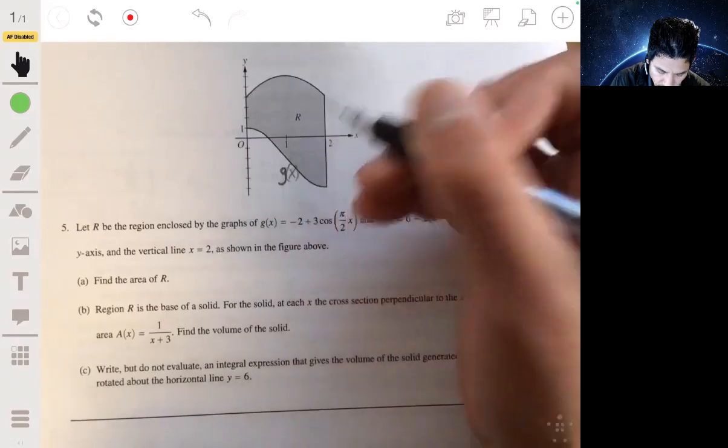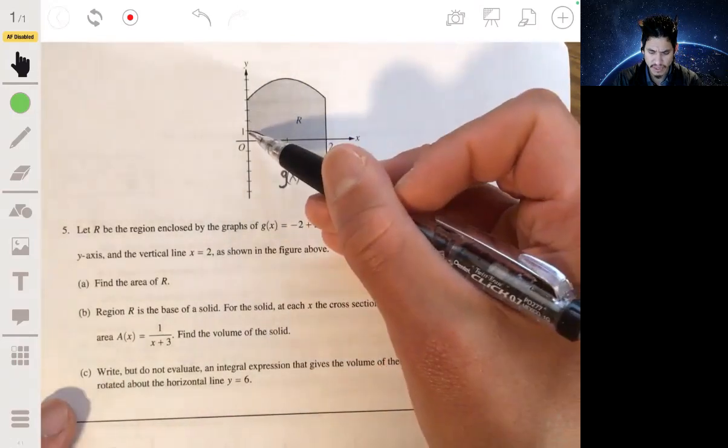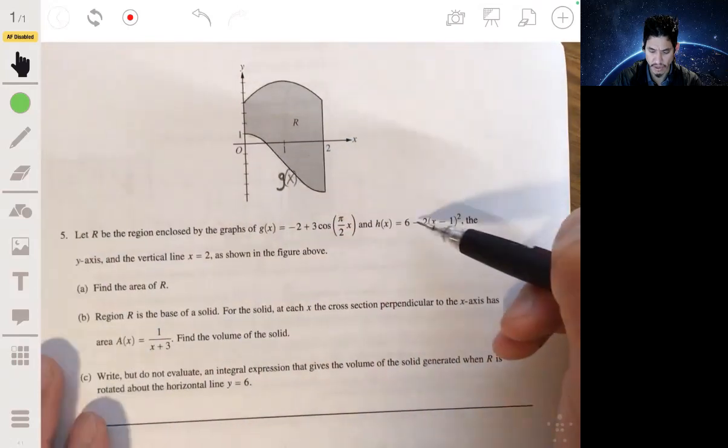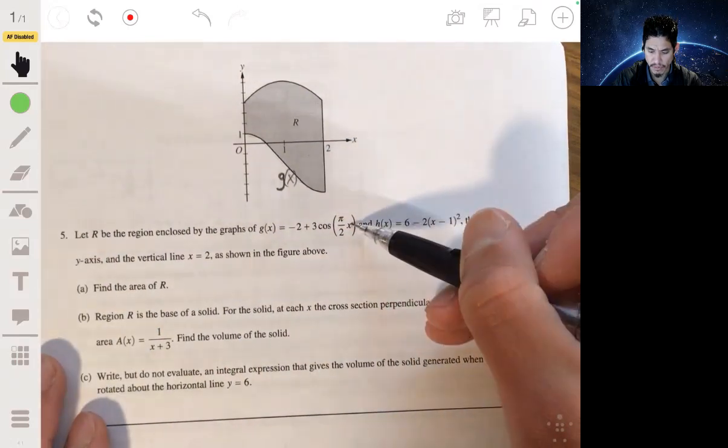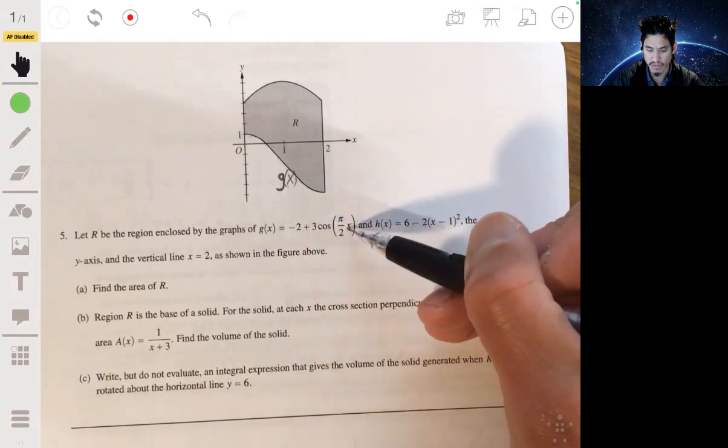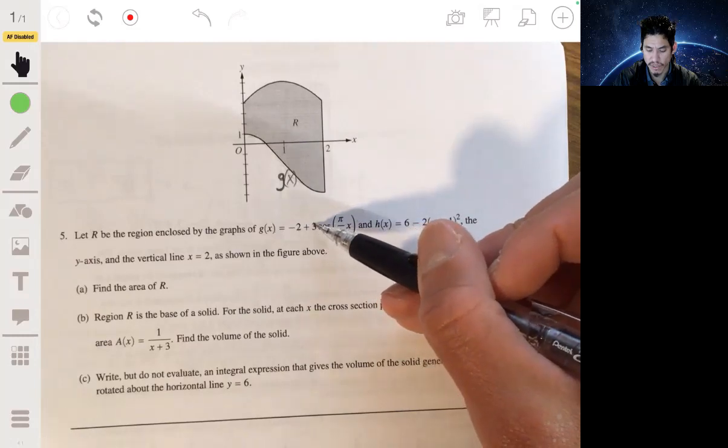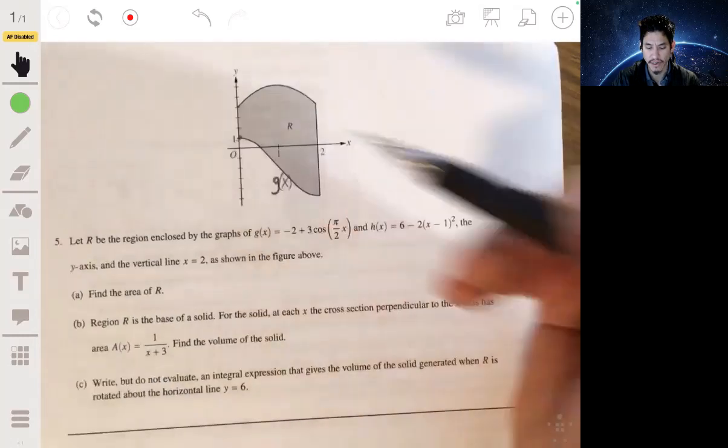Well, you can check, you can obviously check of course, but you can kind of see it follows that trig pattern. But you can check just to be sure. Plug in 0, negative 2 plus 3 times the cosine of 0, this will be 1, negative 2 plus 3 is 1, and you know that's there.